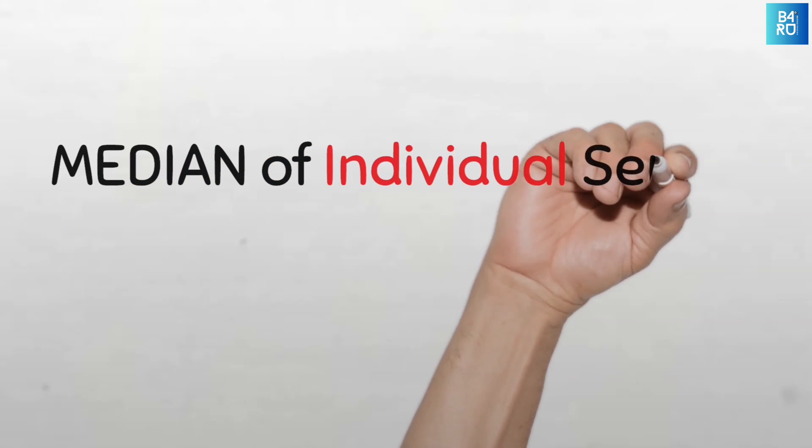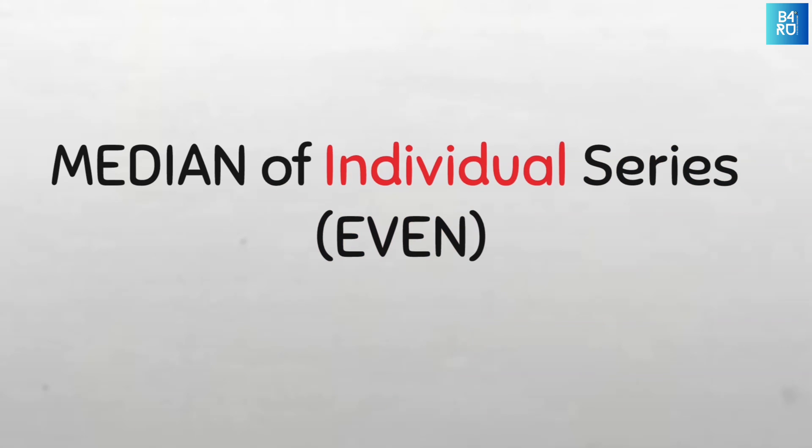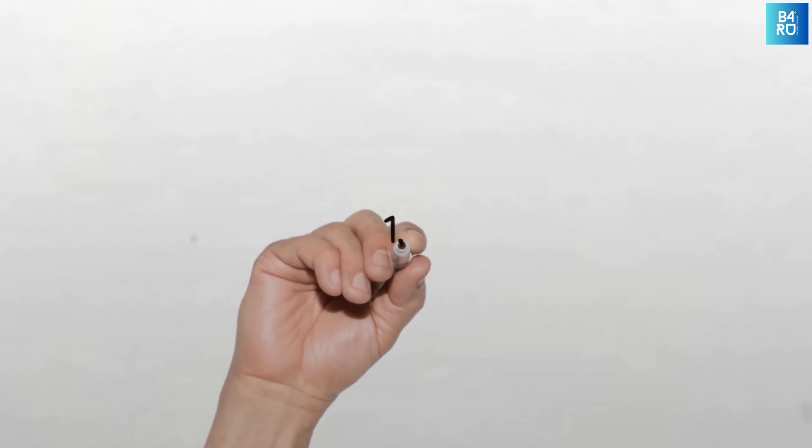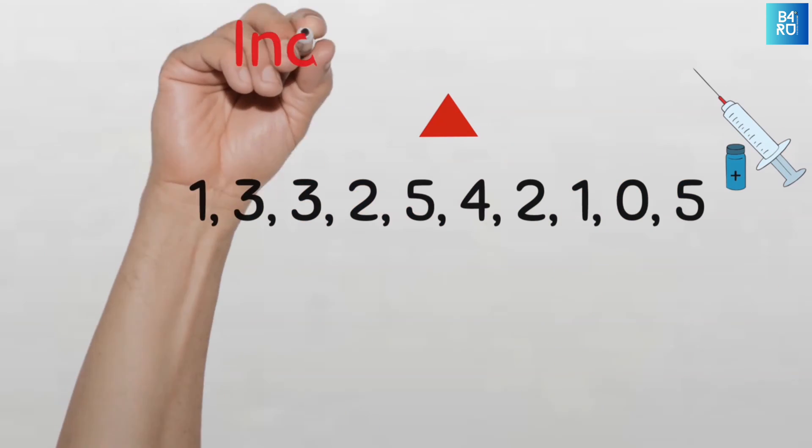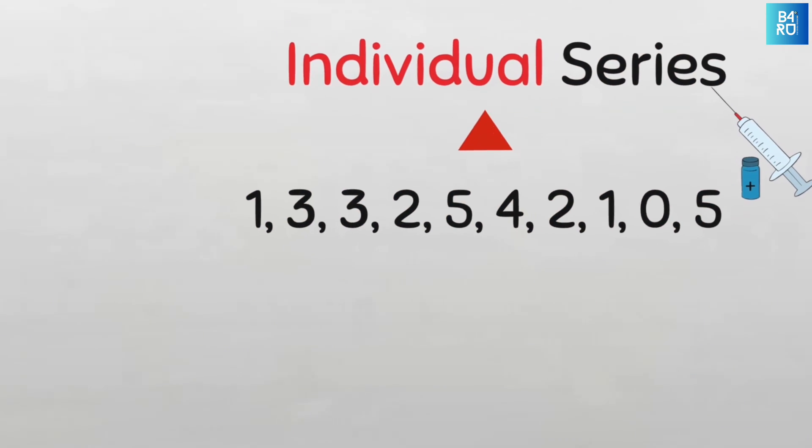How to find the median for individual series data with even number of values. This is the individual series data of the number of times that 10 children were vaccinated in their lifetime. Let's find the median of this data.